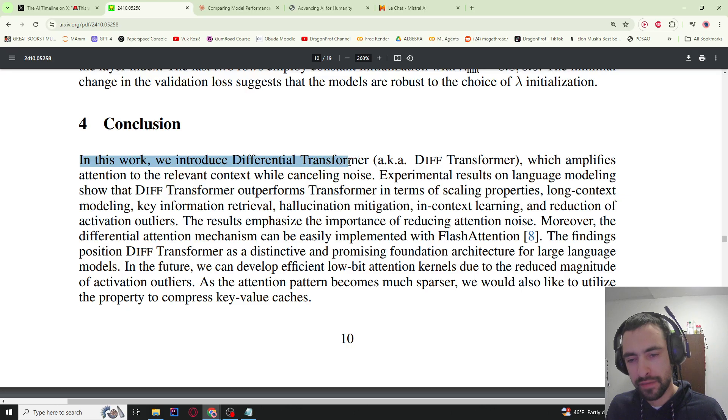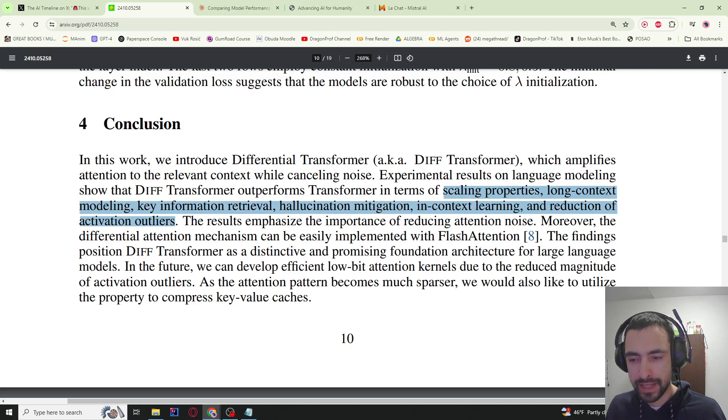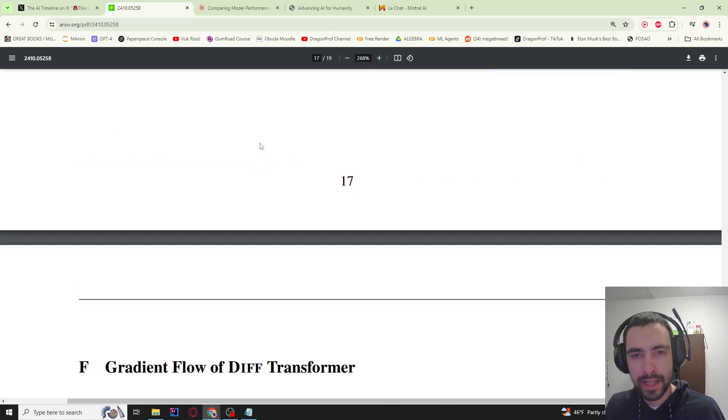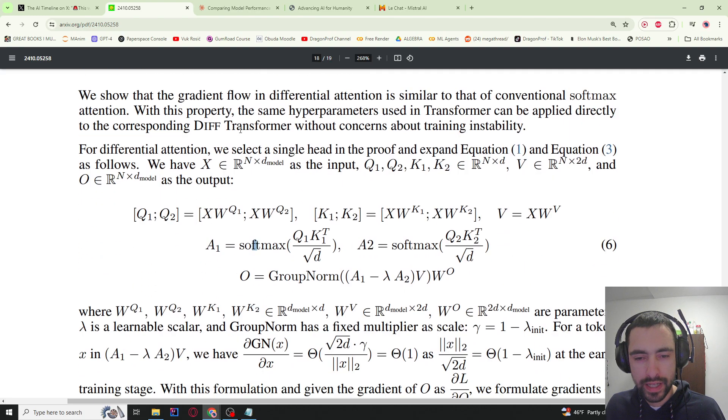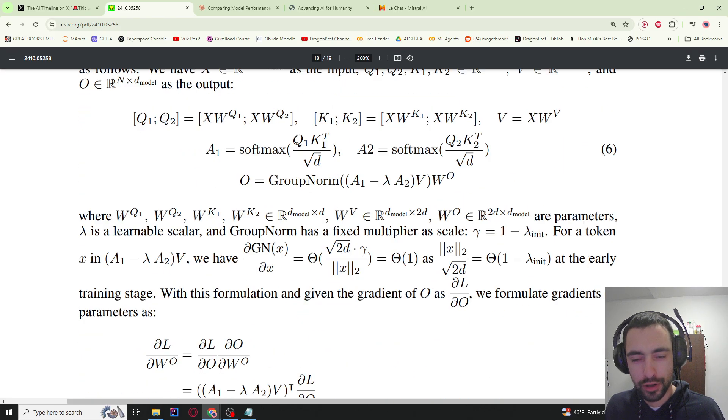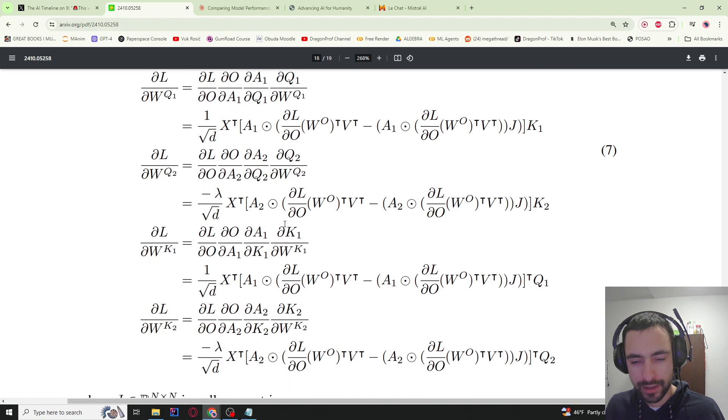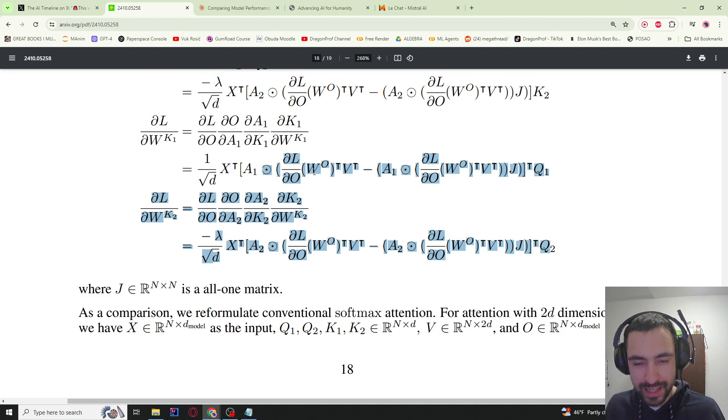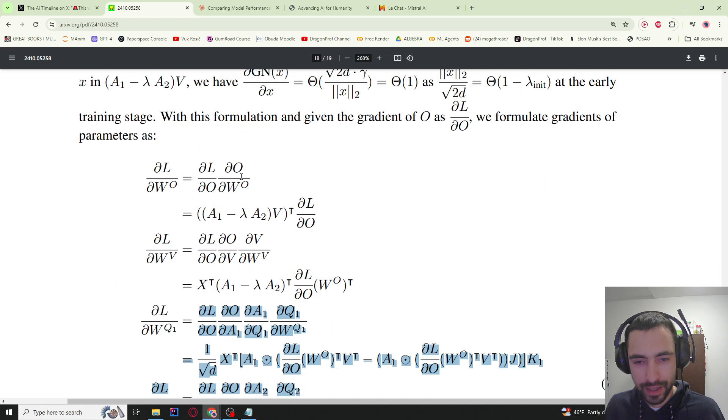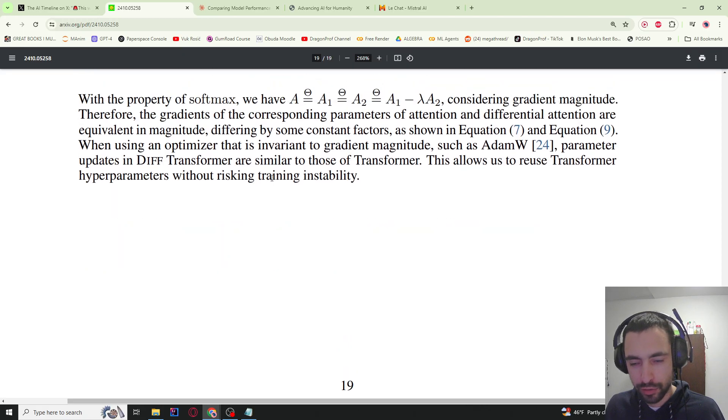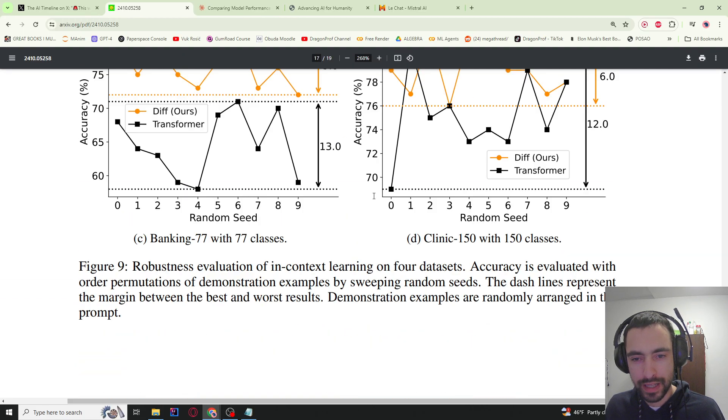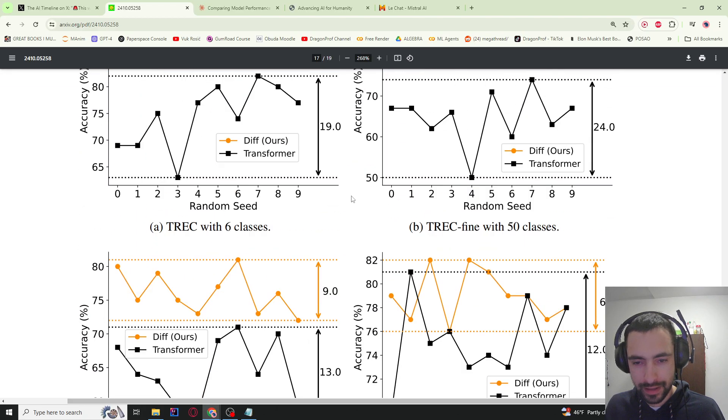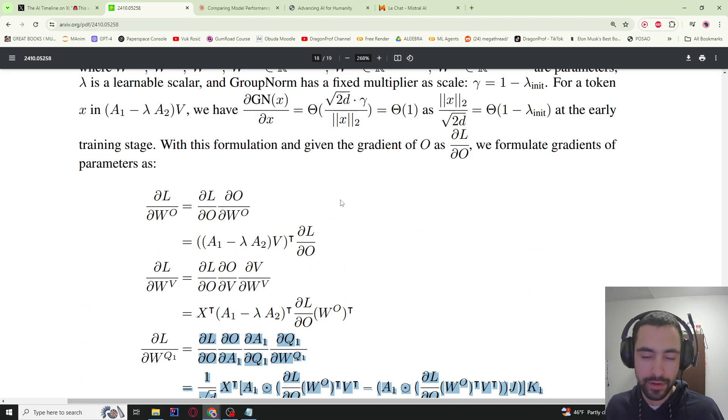In conclusion, in this work we introduce differential transformer which amplifies attention to the relevant context while cancelling noise. It has all of the benefits that we explained and also can be easily implemented with Flash Attention. That's it, but if you scroll down, we can see they also have the gradient flow of this differential transformer and all of the mathematics here. If you're interested, I'm not going to be explaining this because I probably need a lot of time to even understand this myself, but I do plan on understanding this as well. If you want to recreate the experiments, you can also scroll down. I think they have code and other graphs and tutorials here. Thank you for watching, see you in the next paper review.